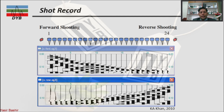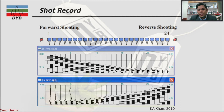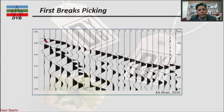For static correction we have two types of shooting: forward shooting and reverse shooting. In forward shooting, the source is on one side with 24 receivers in one direction. Then we fire a shot from the other side of the receivers — this is called the reciprocity of seismic data. Once both forward and reverse records are ready, you pick the first break — in this case the zero crossing positive slope, shown by the small red dashed lines.